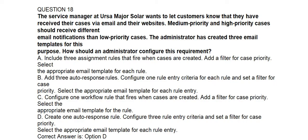Question number eighteen. The service manager at URSA Major Solar wants to let customers know that their cases have been received via email and their website. Medium and high priority cases should receive different email notifications than low priority cases. The administrator has created three email templates for this purpose. How should an administrator configure this requirement? Option A: Include three assignment rules with a filter for case priority. Option B: Add three auto-response rules with one rule entry criteria each. Option C: Configure one workflow rule with a filter for case priority. Option D: Create one auto-response rule with three rule entry criteria and a filter for case priority. Correct answer is Option D.